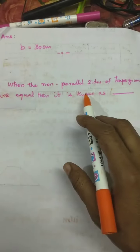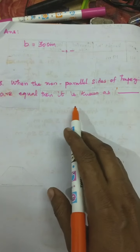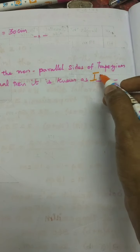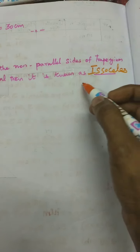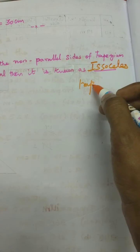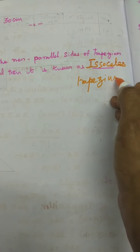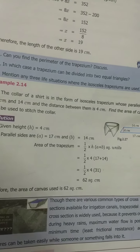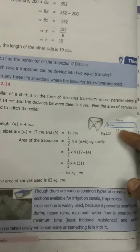When the non-parallel sides of a trapezium are equal, then it is known as isosceles trapezium. You shall see example 2.14.